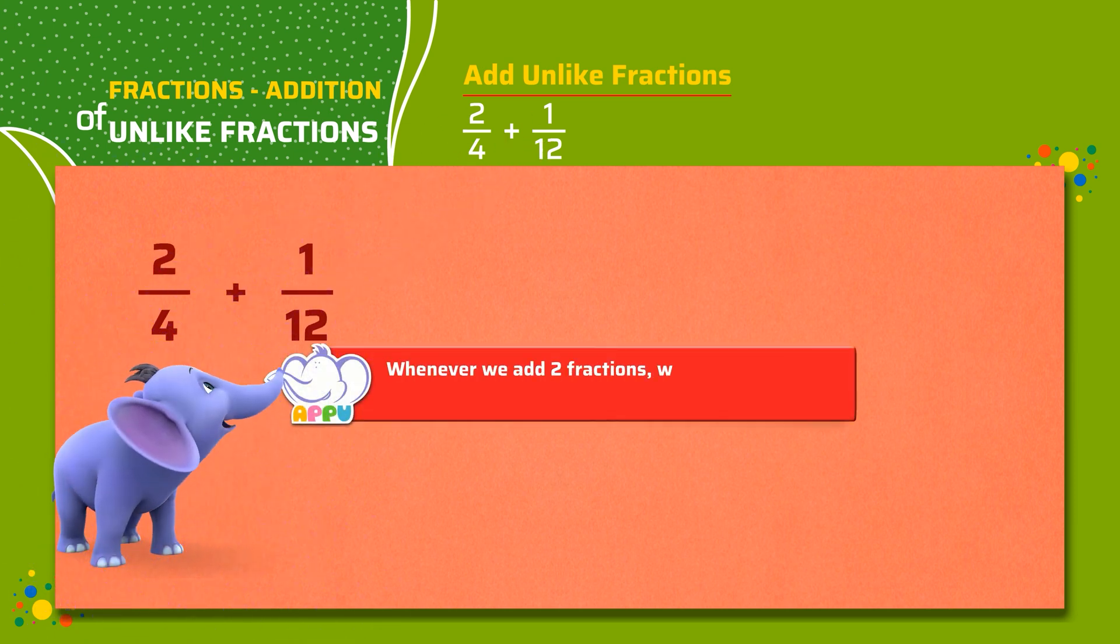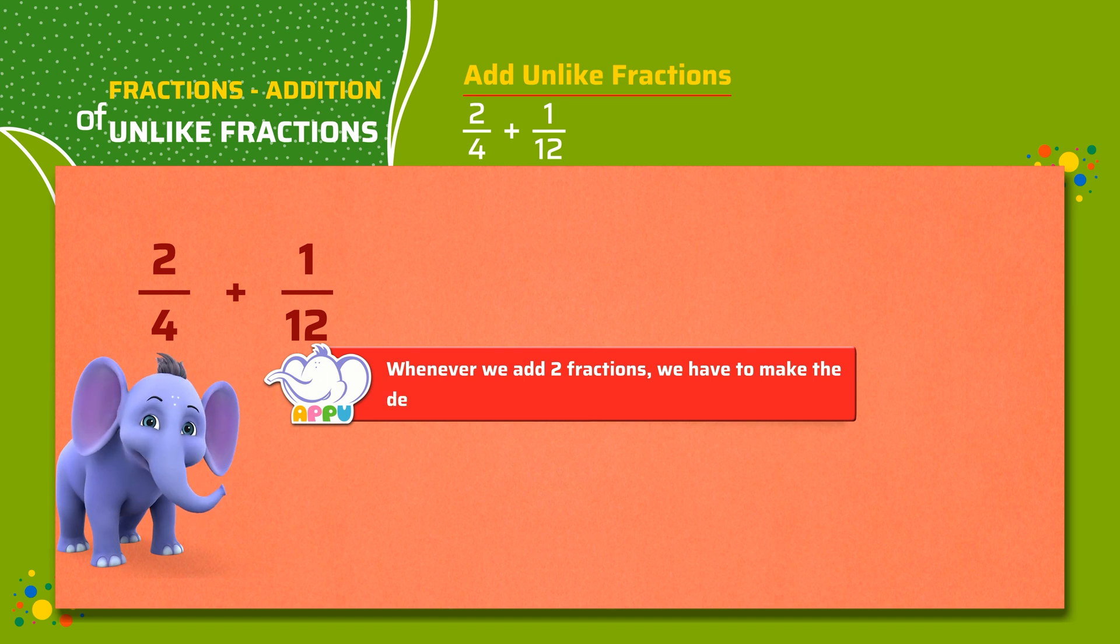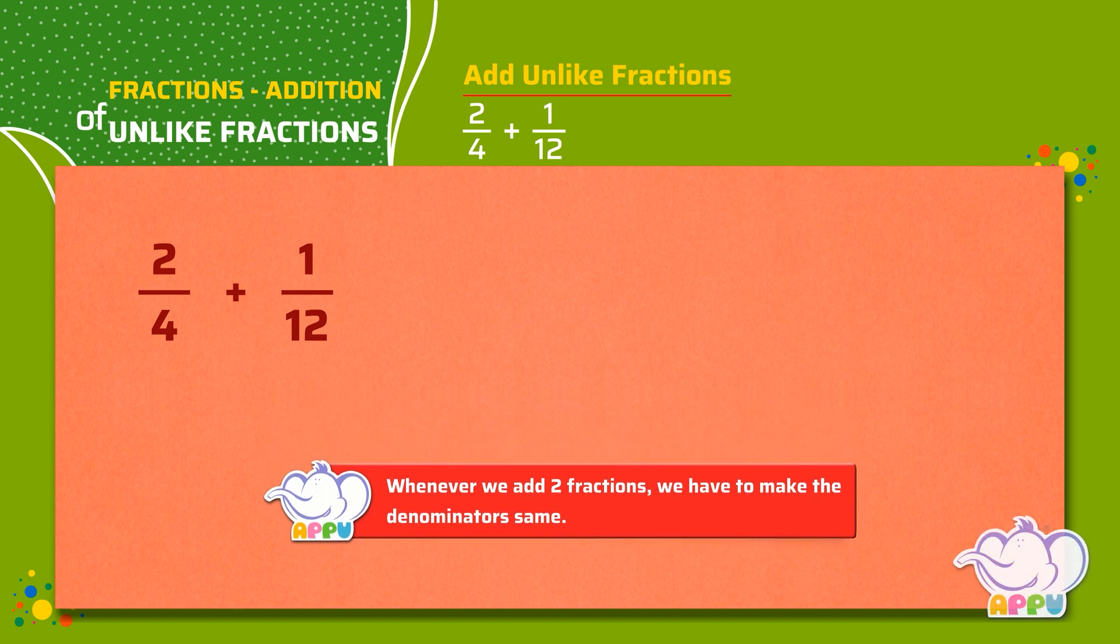Whenever we add two fractions, we have to make the denominators the same. We see that the denominators are not the same for both fractions, but 12 is a multiple of 4.